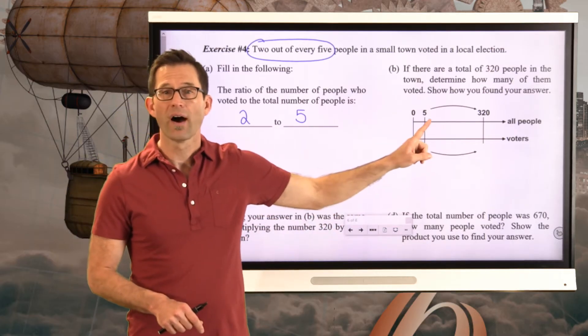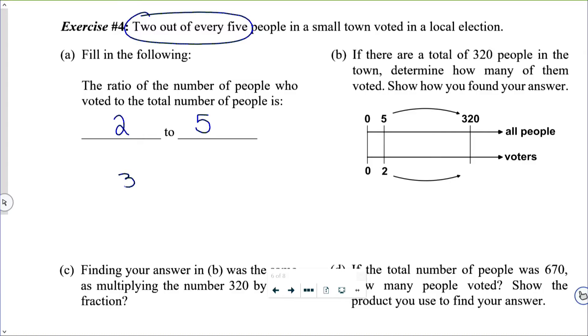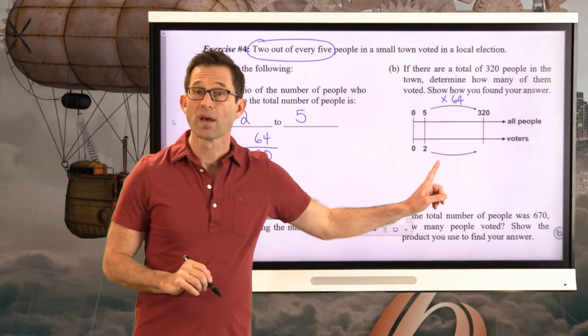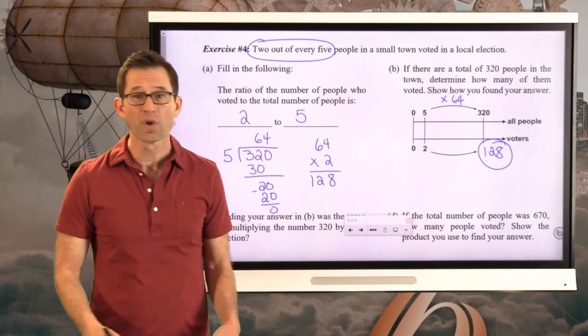Well, I have to think about what I scaled five by in order to get 320. To do that, I really need to do 320 divided by five. Let's see what we get there. That'd be a 6, 30, 20, 4, 20, 0. So that means I must have scaled by 64 to get that 320. That means I also have to scale the two. So now I'm going to take 64 times 2. And that's going to give me 128. So 128 voters.